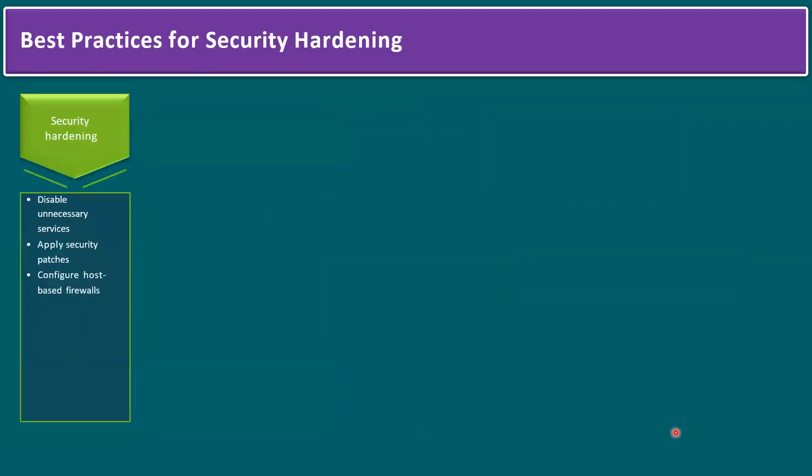Now let me explain the best practices for security hardening. Security is one of our main infrastructure qualities, and within security the key concept is security hardening. One best practice is to disable unnecessary services. Within the operating system — whether Windows, Linux, or ESXi — for example, in a production ESXi environment it is recommended to disable the SSH service and SNMP service, enabling them only when necessary and for a limited period.